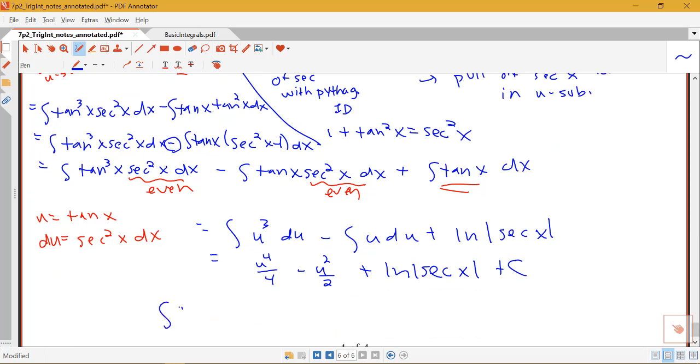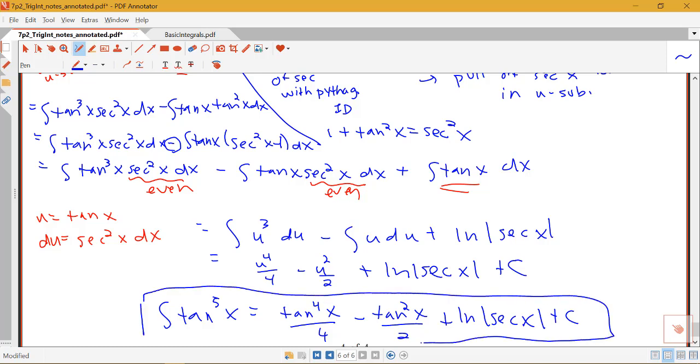And then I just need to replace my u with tangent x. So we get for our final answer: tan to the fourth x over four minus tan squared x over two plus log of the absolute value of secant x plus c.